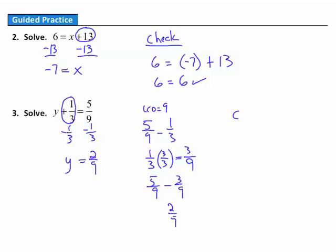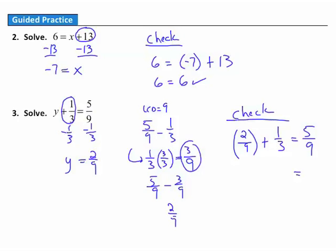Now let's check that answer. Substituting y equals 2 ninths: 2 ninths plus 1 third equals 5 ninths. We need a common denominator of 9, and we've already done that work — 1 third equals 3 ninths. So I replace 1 third with 3 ninths, giving 2 ninths plus 3 ninths on the left, which equals 5 ninths. On the right we have 5 ninths — that is a solution, so we solved the problem correctly.